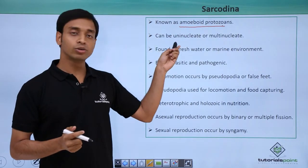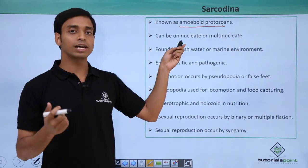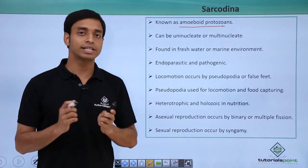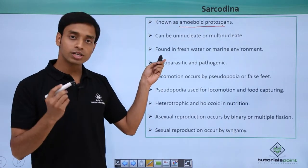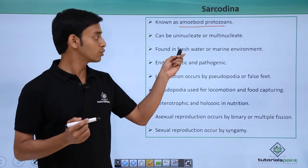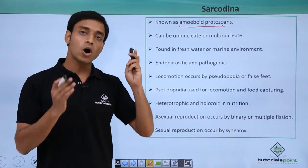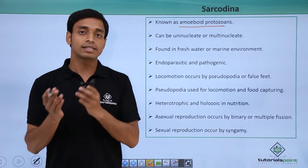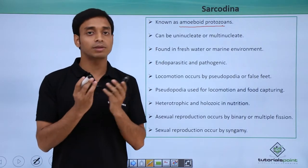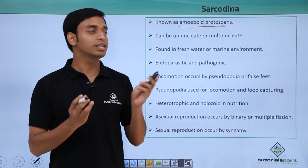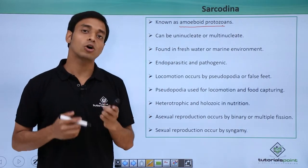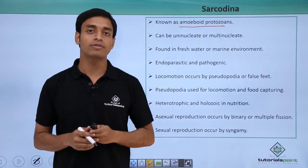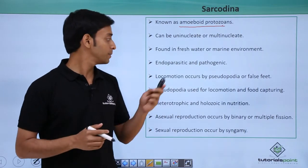They can be uninucleated or they can also be multinucleated. They are mostly found in fresh water, and some types of Sarcodina can also be found in marine environments.